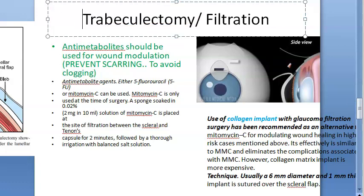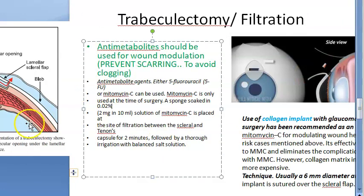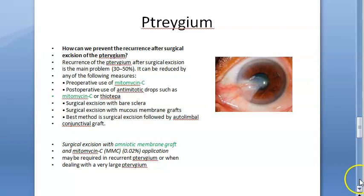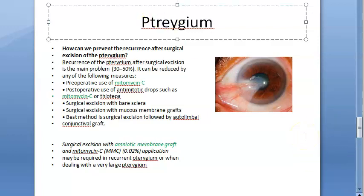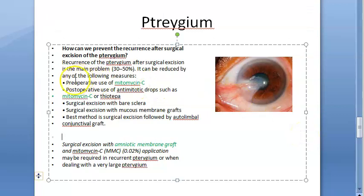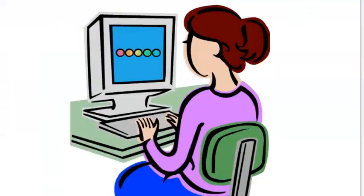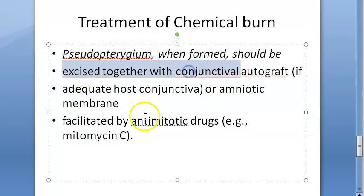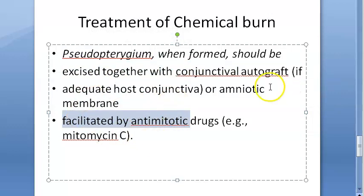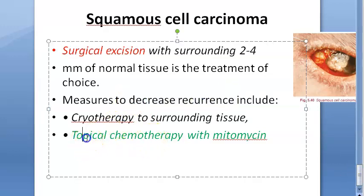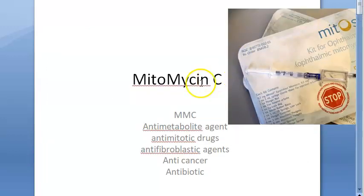In ophthalmic use, Mitomycin C is used in pterygium surgery, glaucoma surgery (trabeculectomy), and squamous cell carcinoma excision. In glaucoma, it creates a new drainage path for aqueous humor; it is applied via a soaked sponge at the filtration site for two minutes. Collagen implant is the newer recommended alternative. For pterygium, it is used pre- and post-operatively to prevent scarring and recurrence.